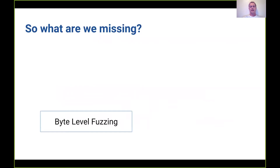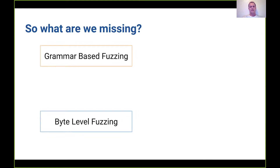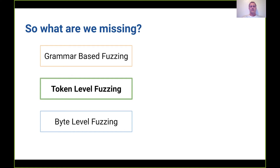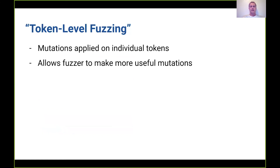So what are we missing? On one level we have byte-level fuzzing, which is very good at certain programs but not good at interpreters. We have grammar-based fuzzing, which is very good at interpreters but still missing part of the stack. That gap is token-level fuzzing. The goal isn't to replace either of the other fuzzers, but to be used in different situations or find different bugs. For token-level fuzzing, we apply mutations on individual tokens — replacing one valid token with another valid token, inserting a series of valid tokens, or removing a series of valid tokens. This allows the fuzzer to make more useful mutations.